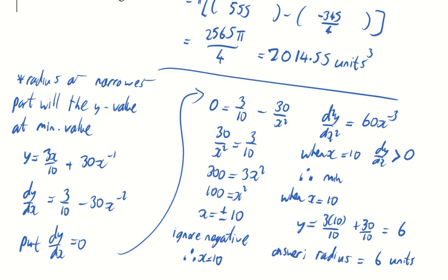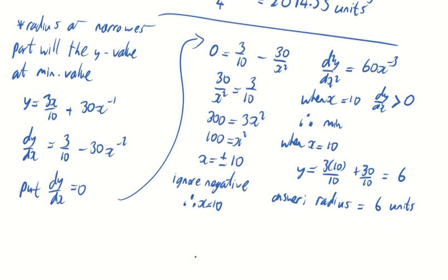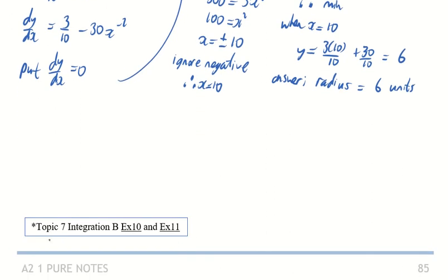That is our notes on Volume of Revolution done. The questions are written down at the bottom of this page. And it's Topic 7, Integration B, Exercise 10 and Exercise 11 as well.